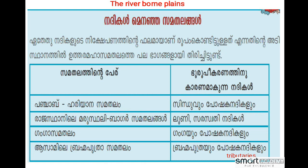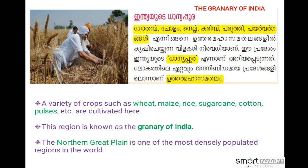This region is known as the Granary of India. A variety of crops such as wheat, maize, sugarcane, cotton, pulses etc. are cultivated here. The northern Great Plain is one of the most densely populated regions in the world.